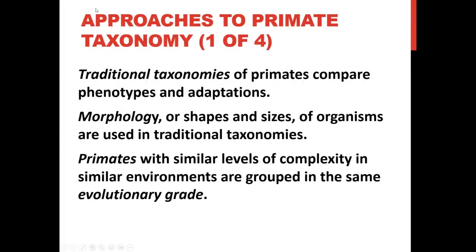Approaches to primate taxonomies: traditional taxonomies — the older ways of grouping primates — compared phenotypes and adaptations. Phenotypes are basically visible traits: this type of fur, these types of fingers, these types of eyes. They also looked at morphology, or the shape and size of organisms. Primates with similar levels of complexity in similar environments were grouped in the same evolutionary grade — so they were looking at appearance, behavior, size, complexity, and habitat.